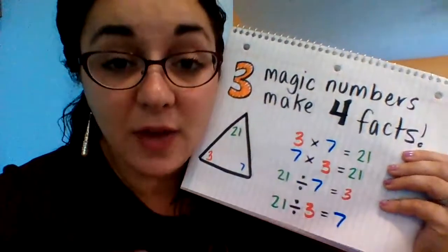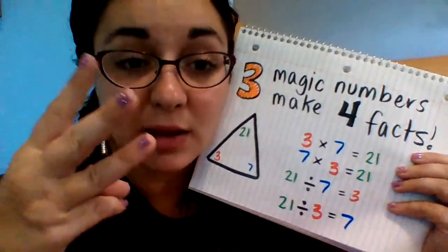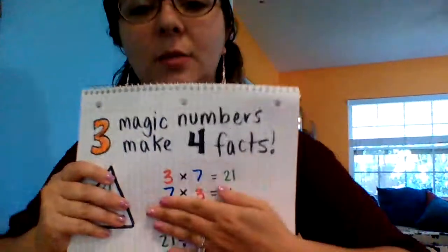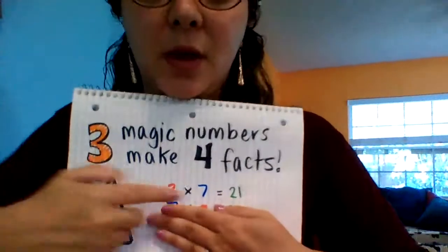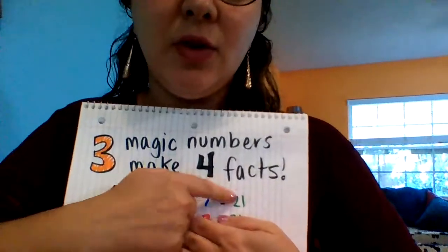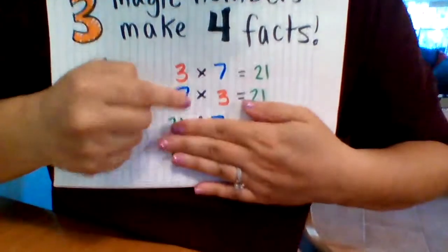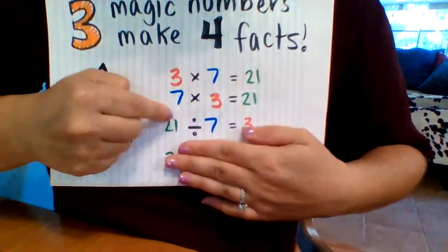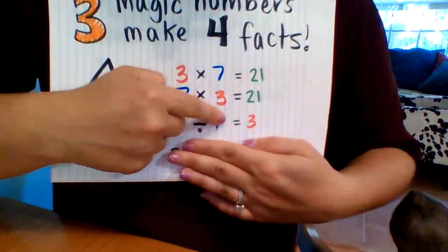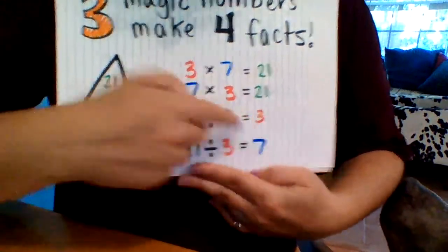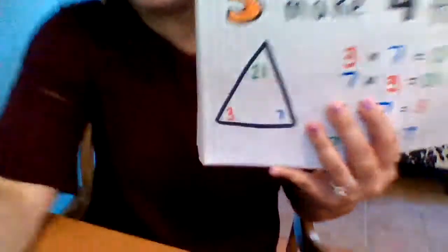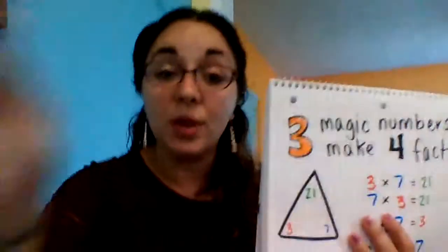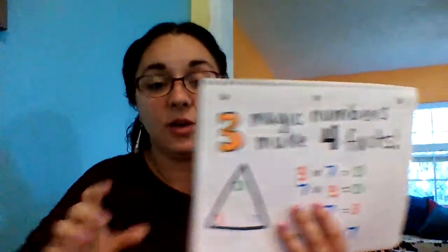Each of these facts uses the same 3 numbers — 3, 7, and 21. They just move them around in the equation. When we multiply, the biggest number comes last. When we divide, that big number moves to the front of the division equation.